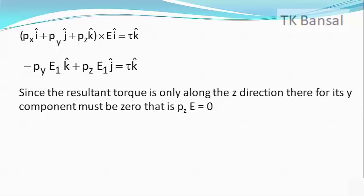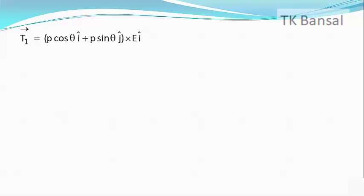Since the torque is only along the Z direction, its Y component must be zero, implying P_z E = 0, so P_z = 0. This means P lies entirely in the x-y plane. Since P makes angle θ with the x-axis, we write P = P cosθ î + P sinθ ĵ. Hence T₁ = P × E₁ = −PE sinθ k̂.